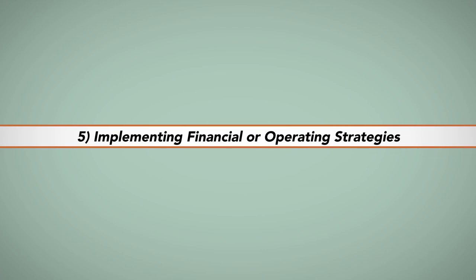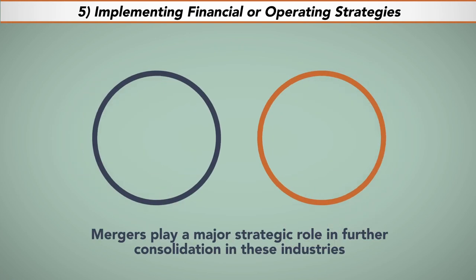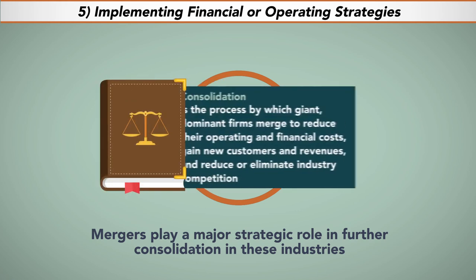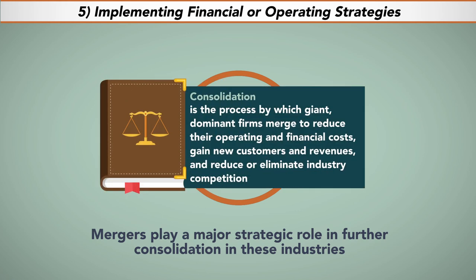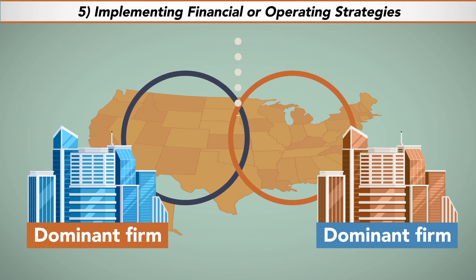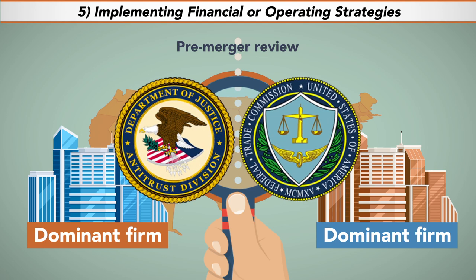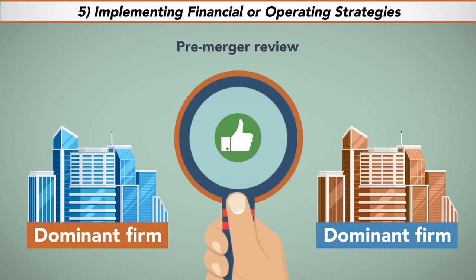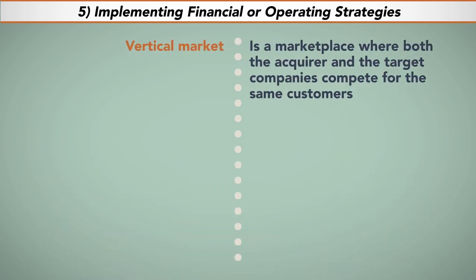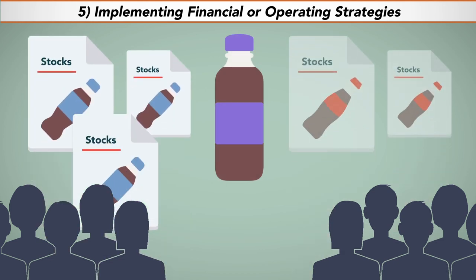Five: implementing financial or operating strategies. In mature industries where few companies dominate market share, such as computer hardware and software, banking and financial services, or health insurance, mergers play a major strategic role in further consolidation. Consolidation is the process by which giant, dominant firms merge to reduce their operating and financial costs, gain new customers and revenues, and reduce or eliminate industry competition. In the U.S., proposed mergers involving dominant firms operating within the same vertical market will normally be reviewed in a pre-merger review by either the Department of Justice Antitrust Division or the Federal Trade Commission to determine whether the proposed merger should be allowed to go forward. A vertical market is a marketplace where both the acquirer and target companies compete for the same customers, providing them with competing goods and services. A merger could result in a greater concentration of market share for the surviving firm.